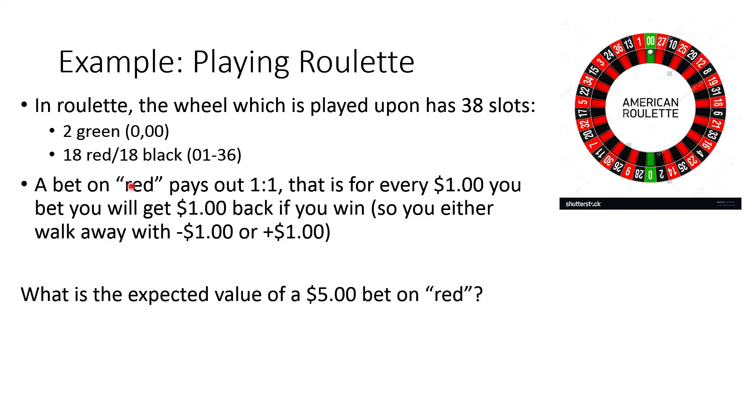So let's say that you bet on red. If you're going to bet on red, that means you're going to bet that the ball is going to land in one of these 18 red spots out of the 38 spots total. And the payout on a red bet. Well, a red bet is pretty likely to win, 18 out of 38. So the payout is not huge. The payout is one to one. So for every dollar you bet, you'll get a dollar back if you win. So basically, you're either going to walk away from that table, either down a dollar or up a dollar. So what I want to know is, what would be the expected value of a $5 bet on red? And remember, expected value is just another way to say average or mean.